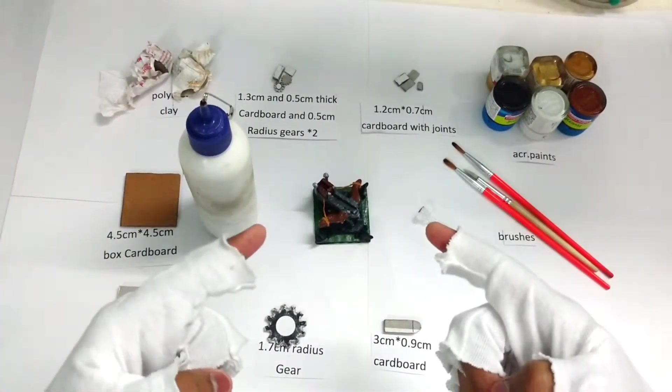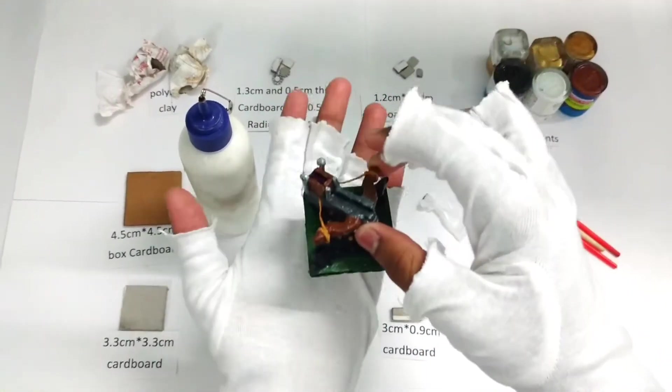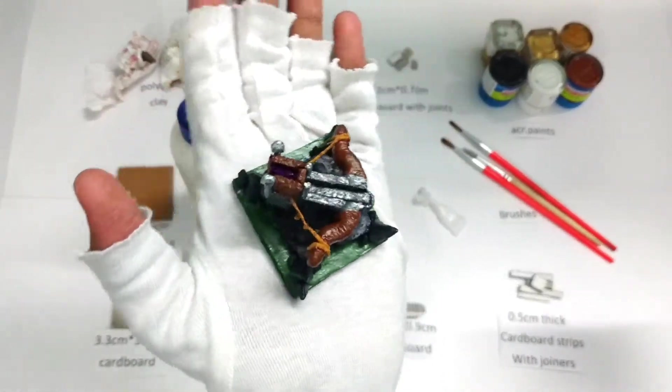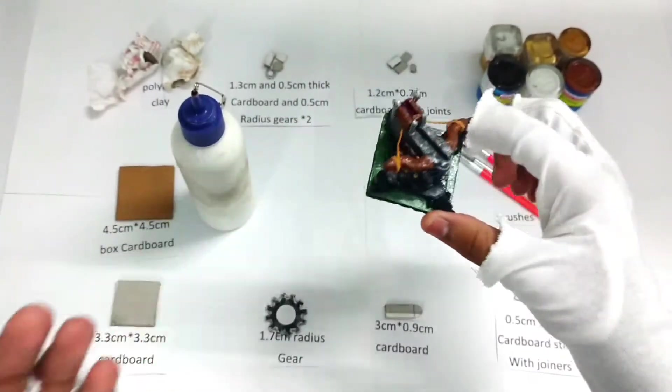Hey guys, welcome to a new video of Fangs Creations. Today in this video I'm going to be showing you how to make this awesome level 3 elixir collector from Clash of Clans. It's a town hall defense building.